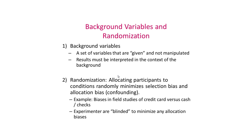A couple of other terms to keep in mind: background variables are any variables that are given in an experiment and are not manipulated. The location where data is collected, the ethnicity of participants, their gender or education level — all represent background variables. We must interpret experiments in the context of those background variables and take care not to over-generalize results into other conditions. That's why replication across different sets of background variables is important, giving the researcher greater confidence in the results.